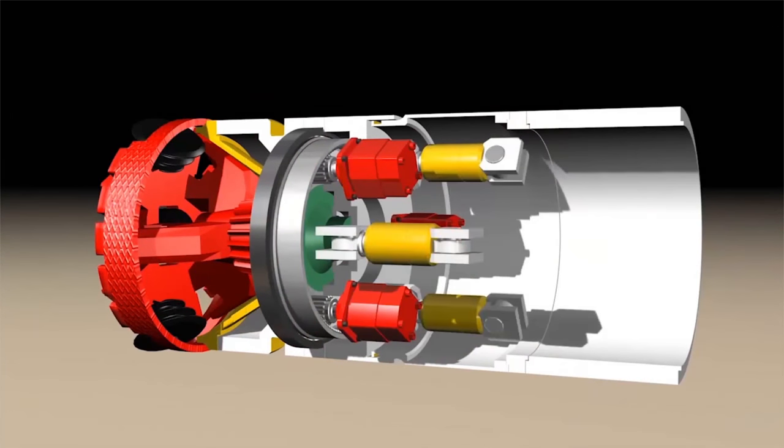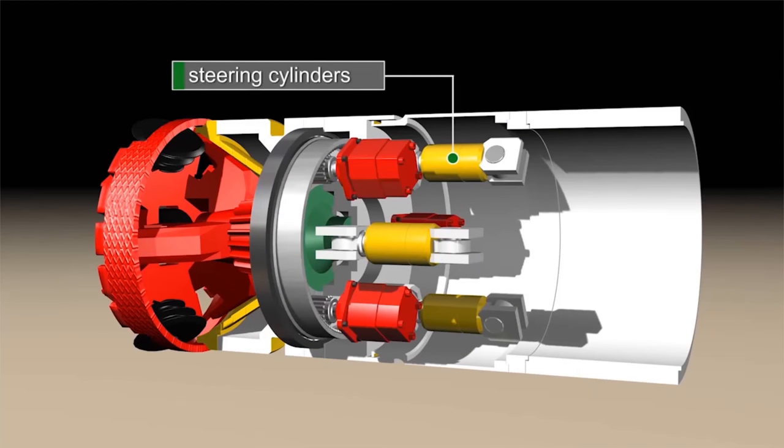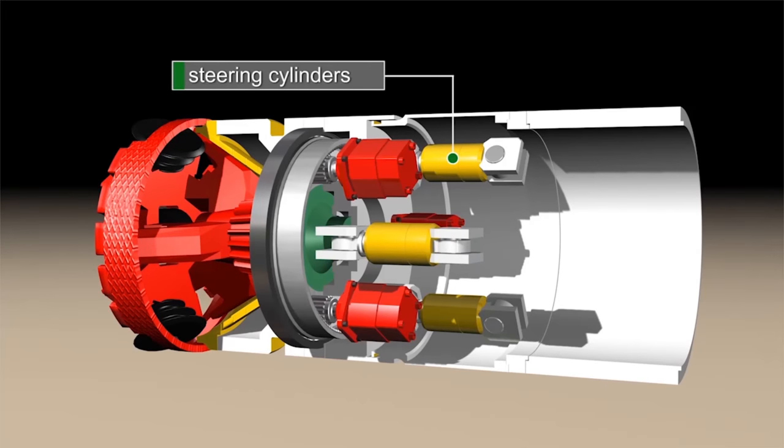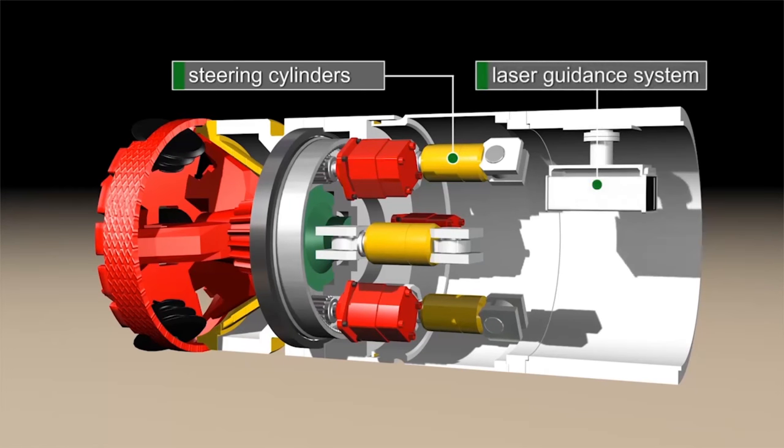The three steering cylinders enable the operator to correct the direction of the tunnel boring machine as well as control the alignment of the machine in curved drives. The position of the cutter head is continuously updated with the help of the laser guidance system.